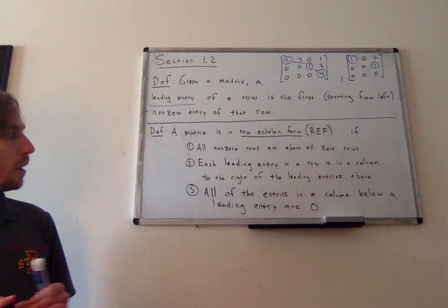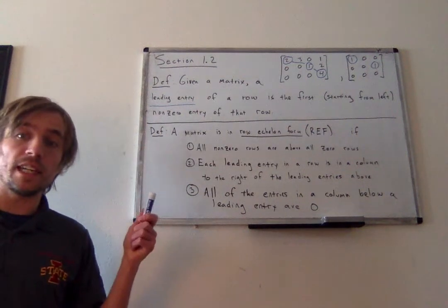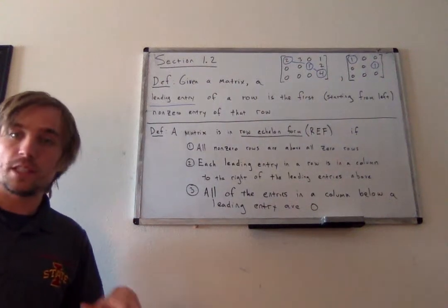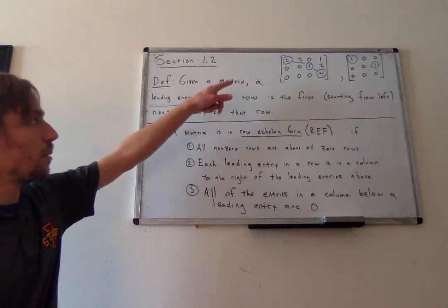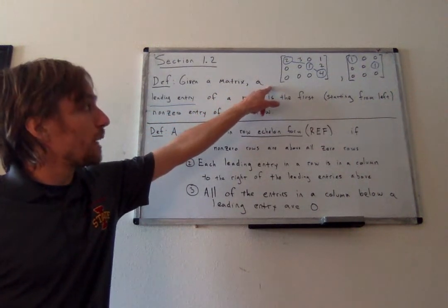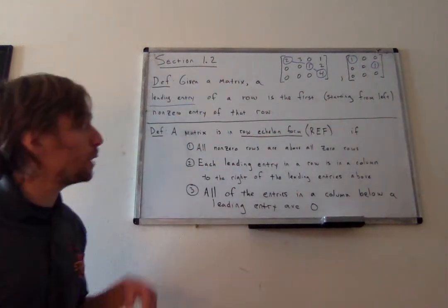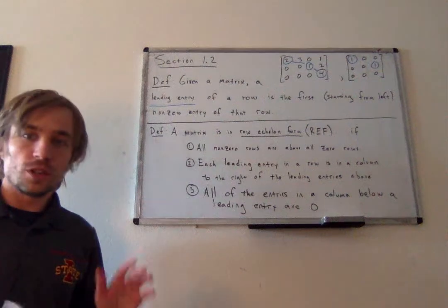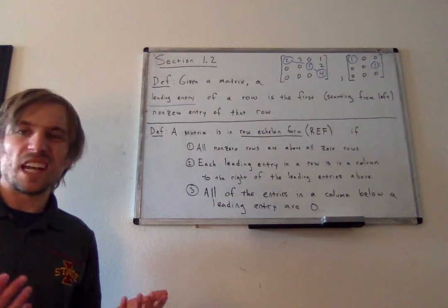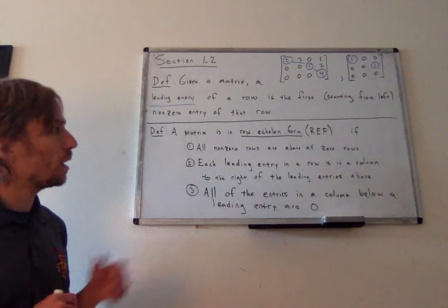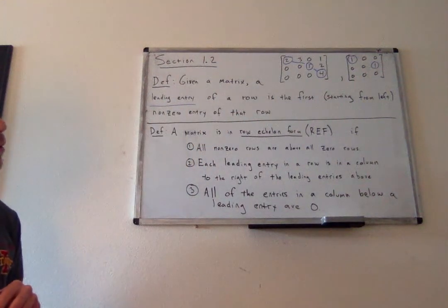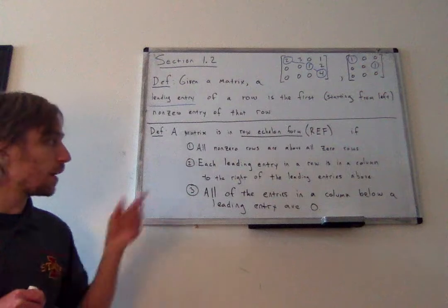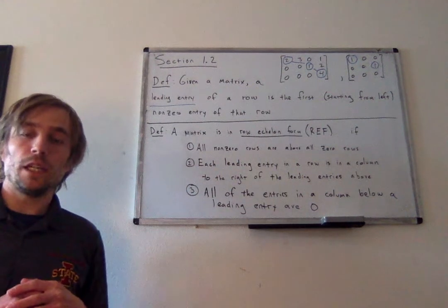Property three: all of the entries in a column below a leading entry are zero. This means any leading entry should be able to look down the matrix and see only zeros. Notice in the first matrix, if the 2 were to look down its column it would only see zeros; if the 1 were to look down its column it would only see zeros; and the 4 is in the last row so it has nothing to look down to. Both matrices shown satisfy all three of these properties and so both are in row echelon form.